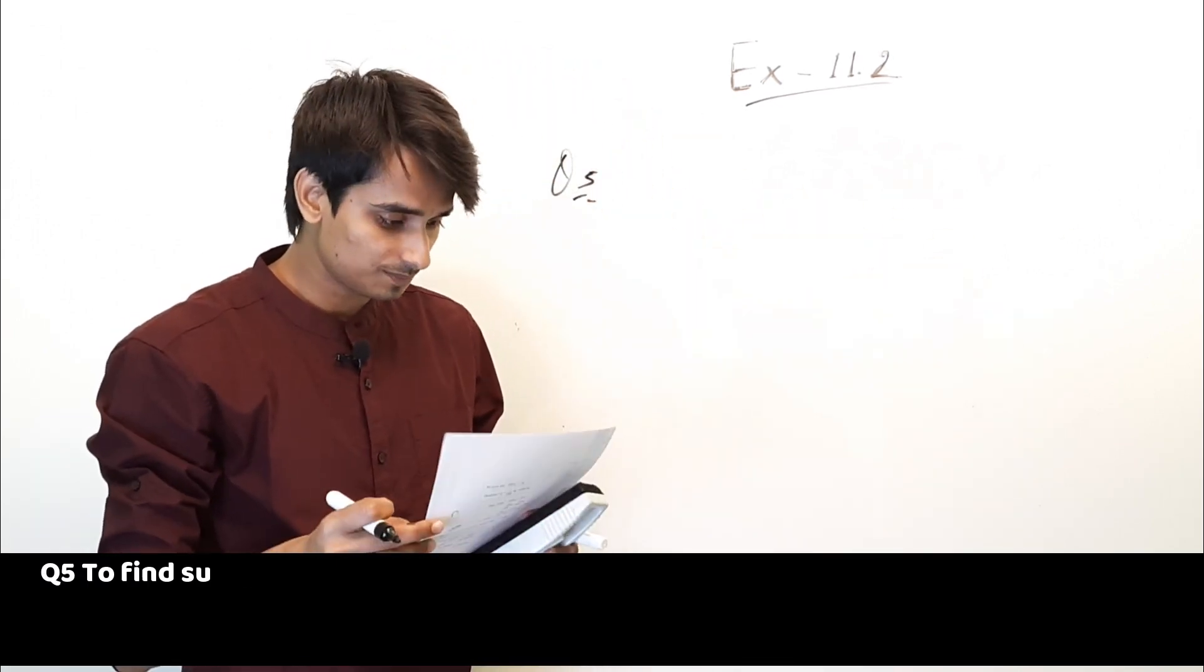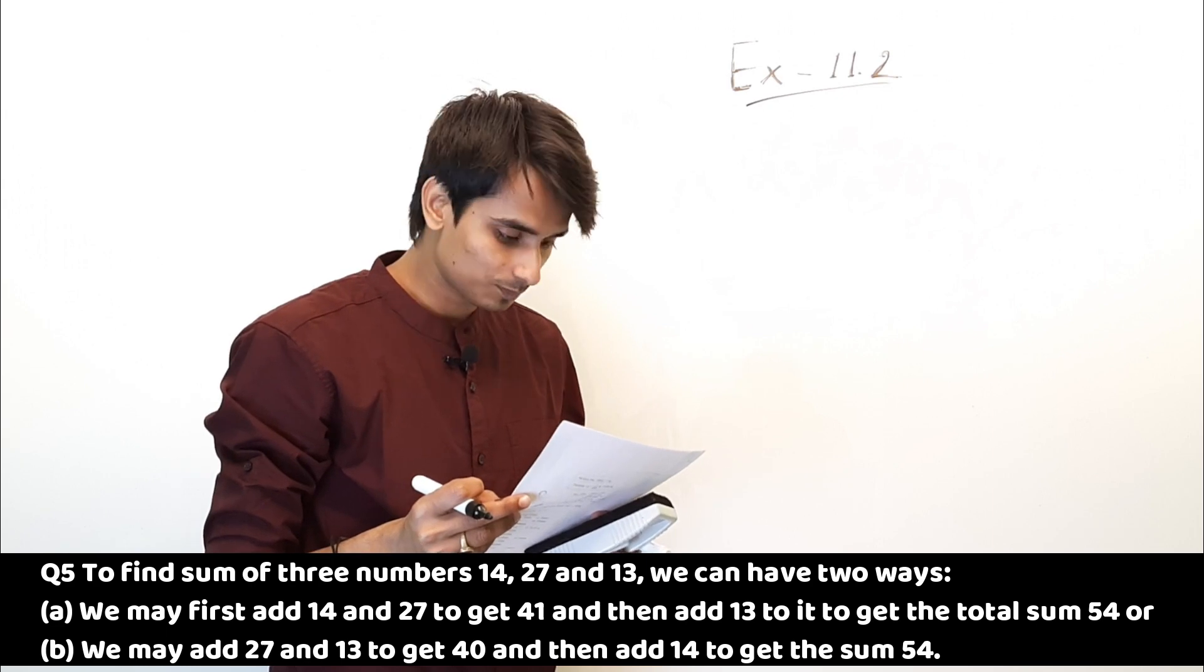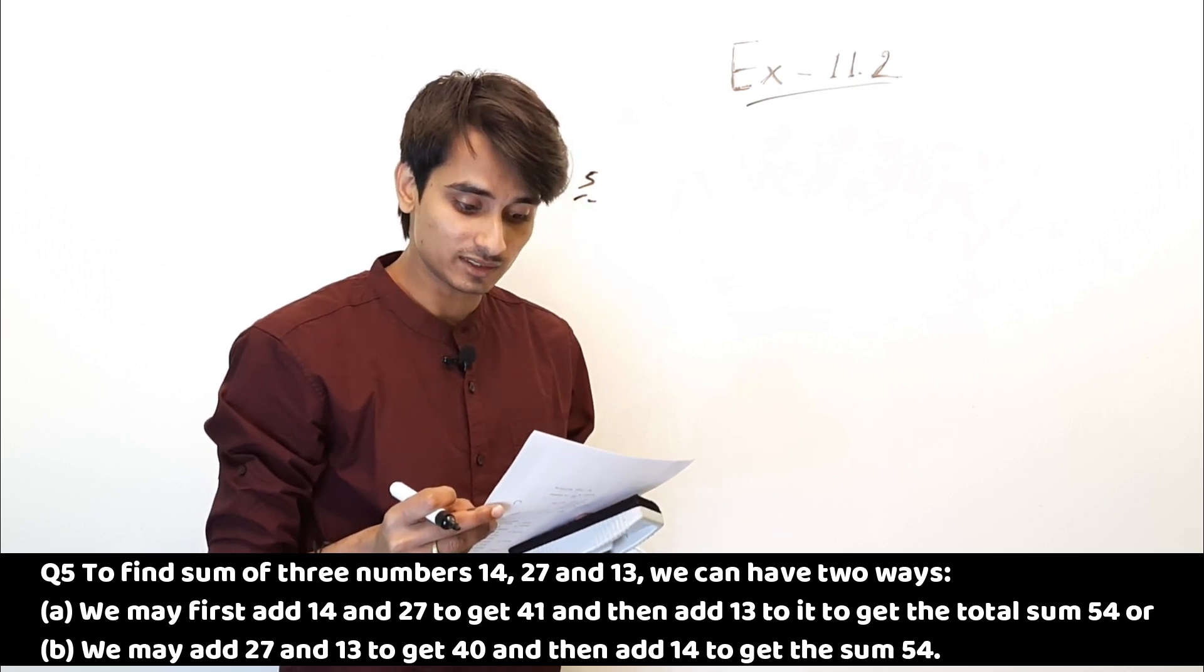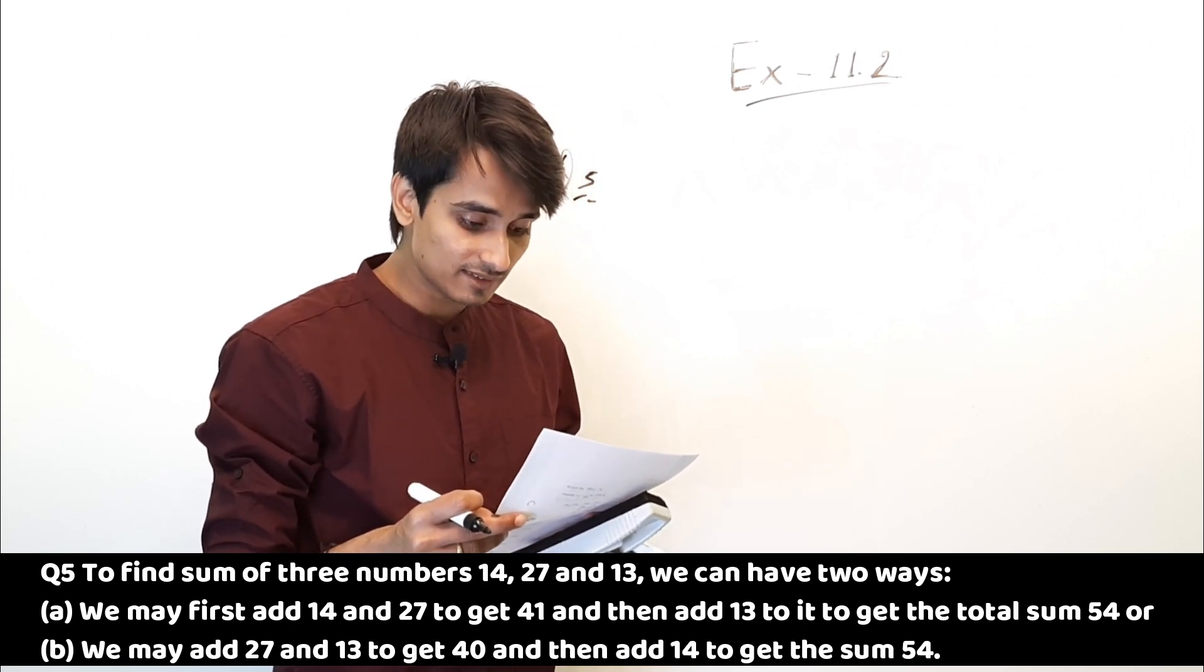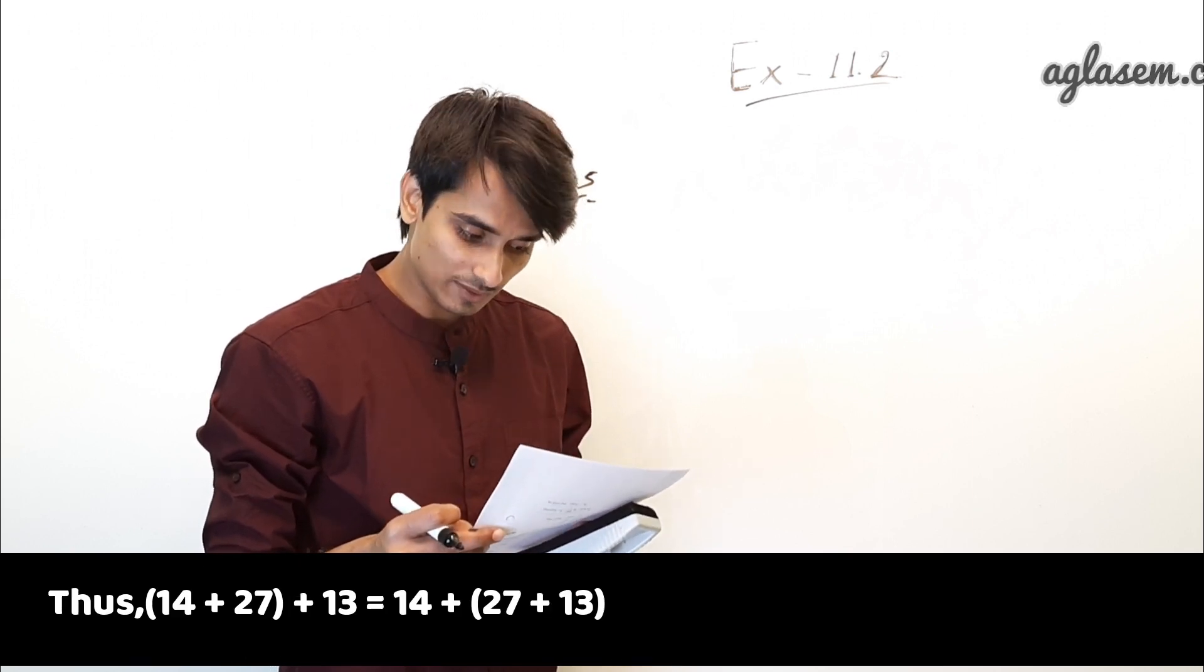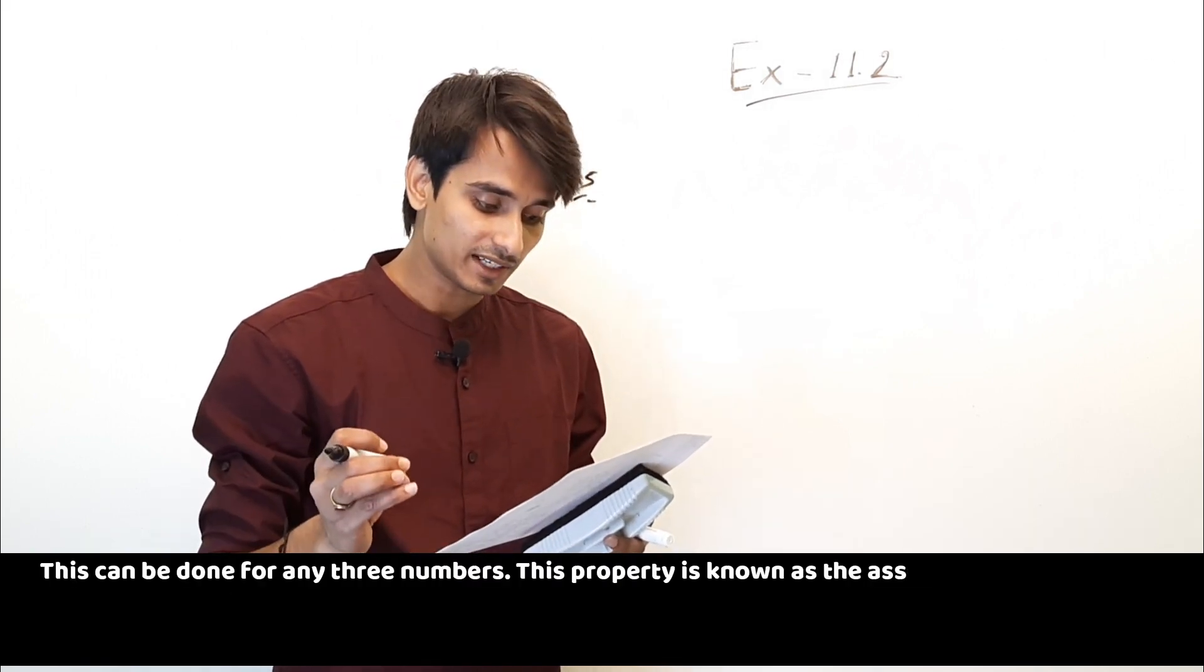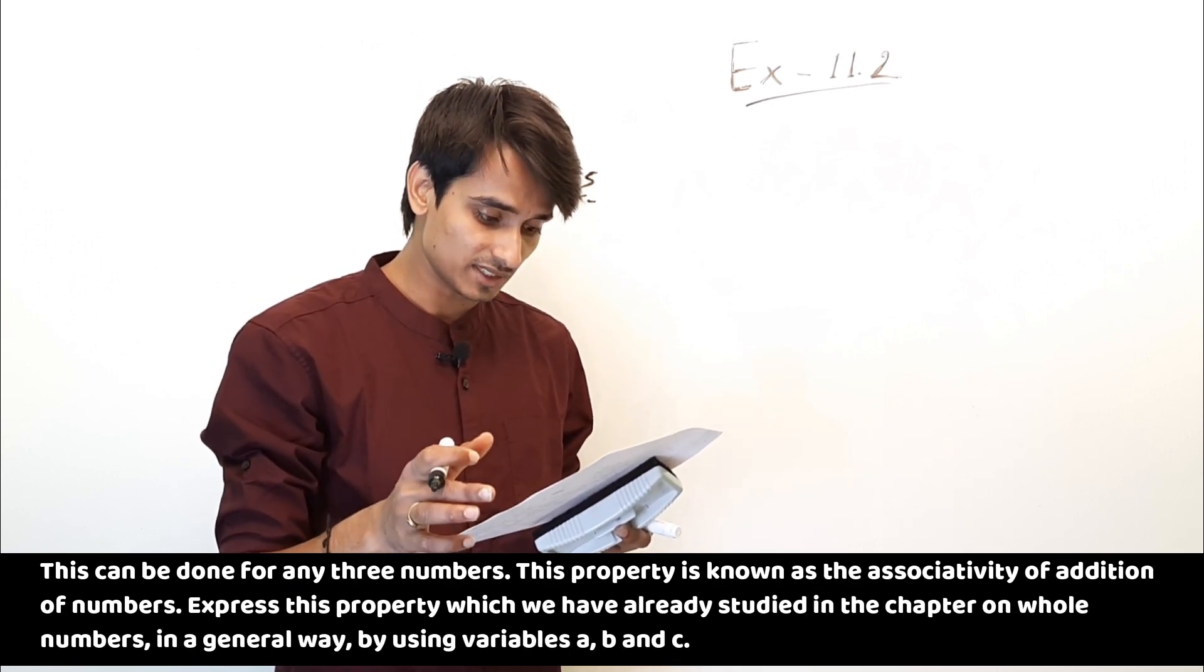Moving to the next question, the fifth and last question. To find the sum of three numbers 14, 27, and 13, we can have two ways: (A) We may first add 14 and 27 to get 41, and then add 13 to it to get the total sum 54. Or (B) we may add 27 and 13 to get 40, and then add 14 to get the sum 54. Thus 14 plus 27 plus 13 equals 14 plus (27 plus 13). This can be done for any three numbers. This property is known as the associativity of addition of numbers. Express this property, which we have already studied in the chapter on whole numbers, in a general way by using variables A, B, and C.